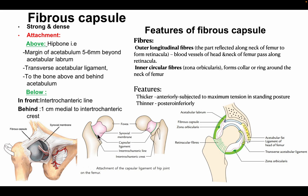You can see in the diagram the attachment of the fibrous capsule anteriorly at the intertrochanteric line, and medially to the intertrochanteric crest. The capsule has outer longitudinal fibers and inner circular fibers. The outer longitudinal fibers are reflected along the neck of the femur to form retinacula, along which blood vessels of the head and neck of the femur pass. The inner circular fibers form the zona orbicularis — a collar or ring around the neck of the femur. The capsule is thicker anteriorly due to maximum tension in the standing posture, and thinner in the postero-inferior aspect.